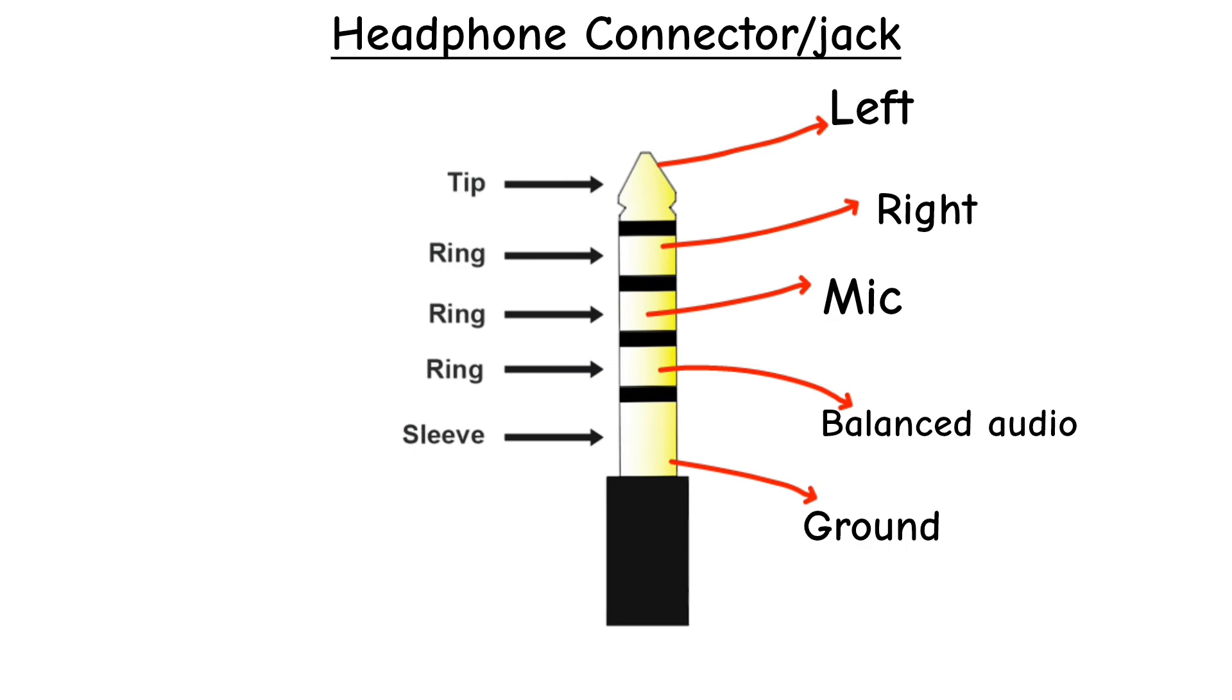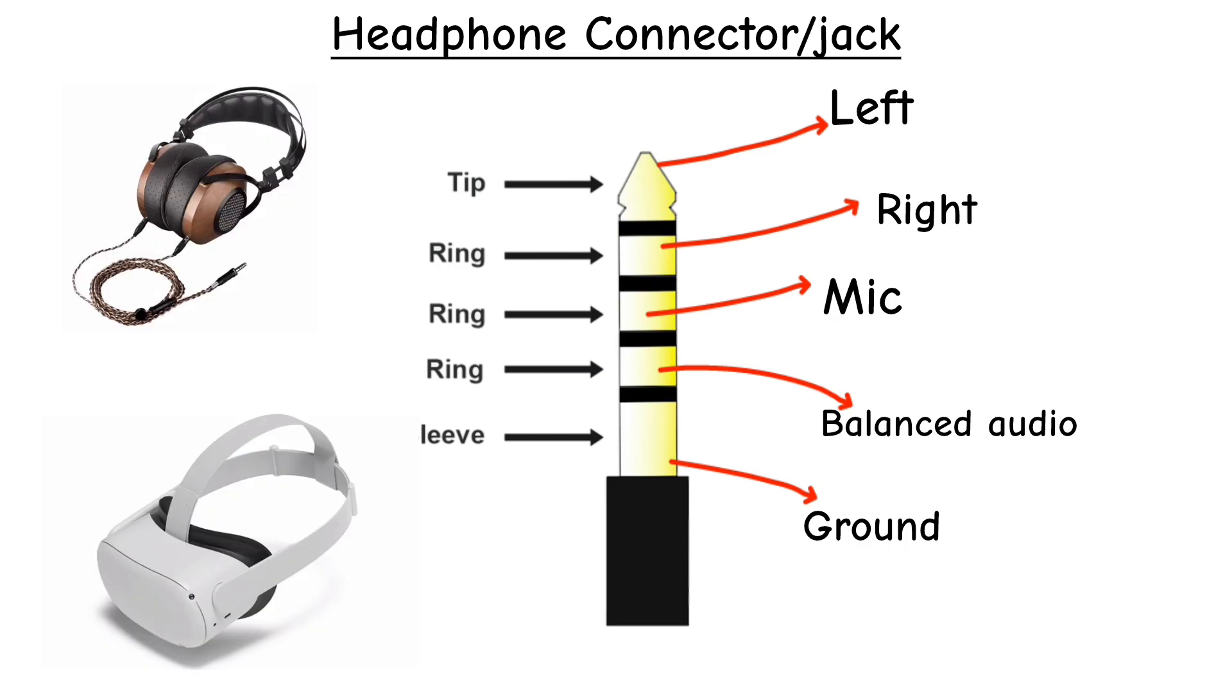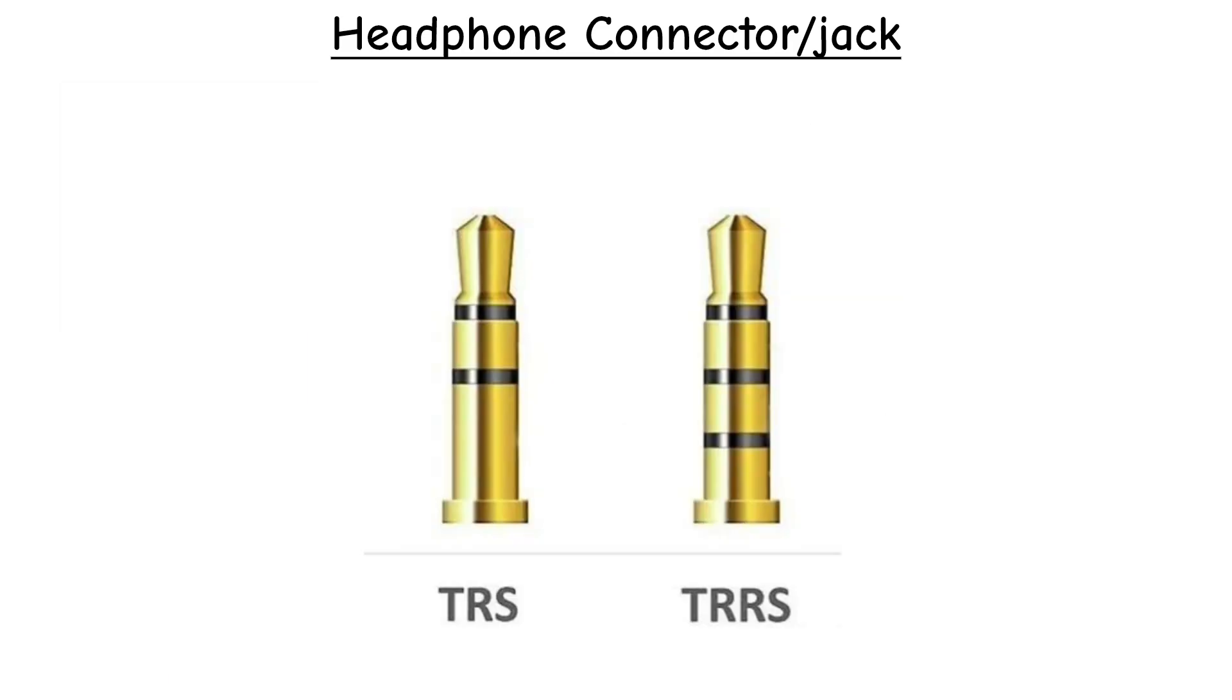This provides balanced headphone wiring, VR headsets, or devices needing extra channels. The analog 3.5mm TRS and TRRS jacks remain the global standard for headphones and headsets.